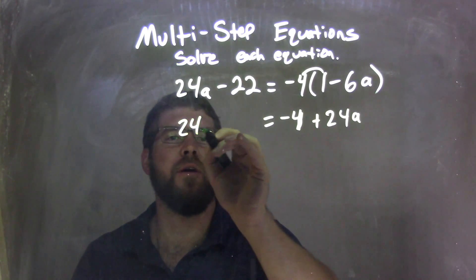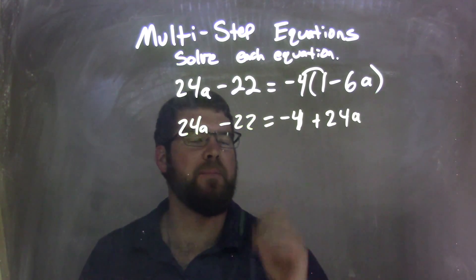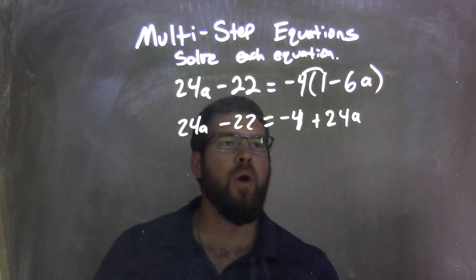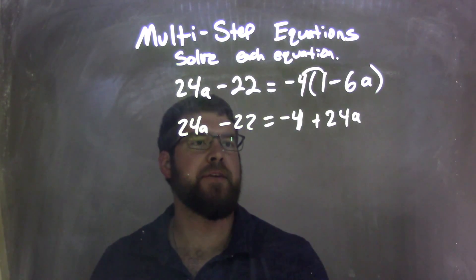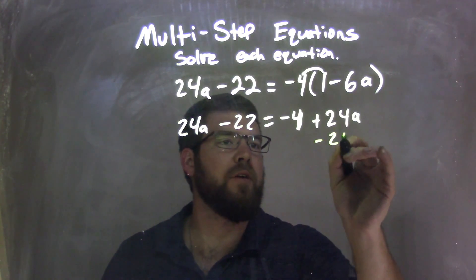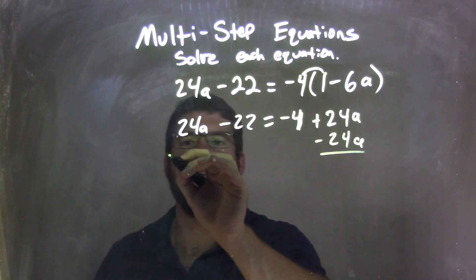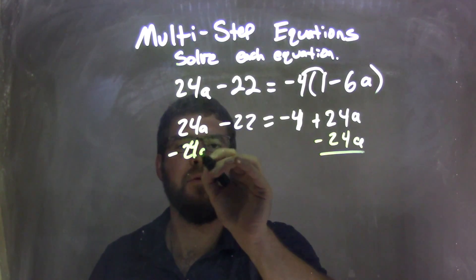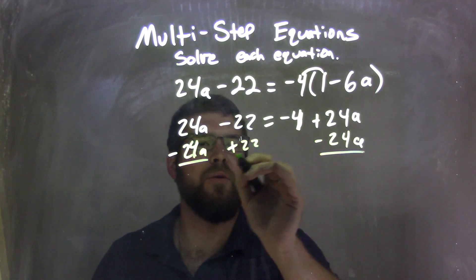Bring down here 24a minus 22. Okay? Well, what I'm going to do now is combine my like terms here. So I'm going to subtract 24a, bring it over to the left, and I'm going to add 22 to the right.